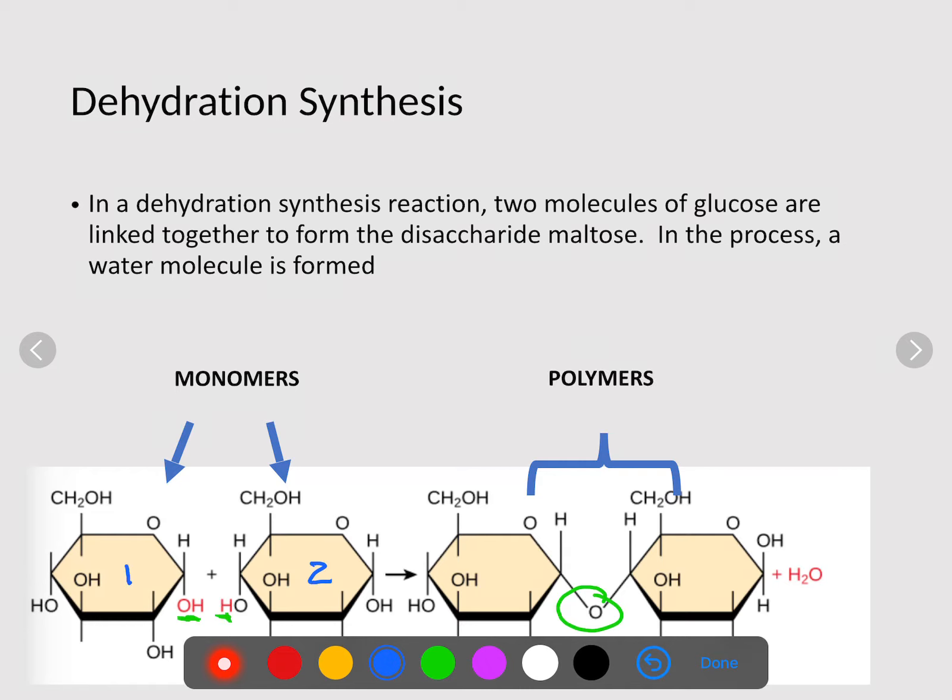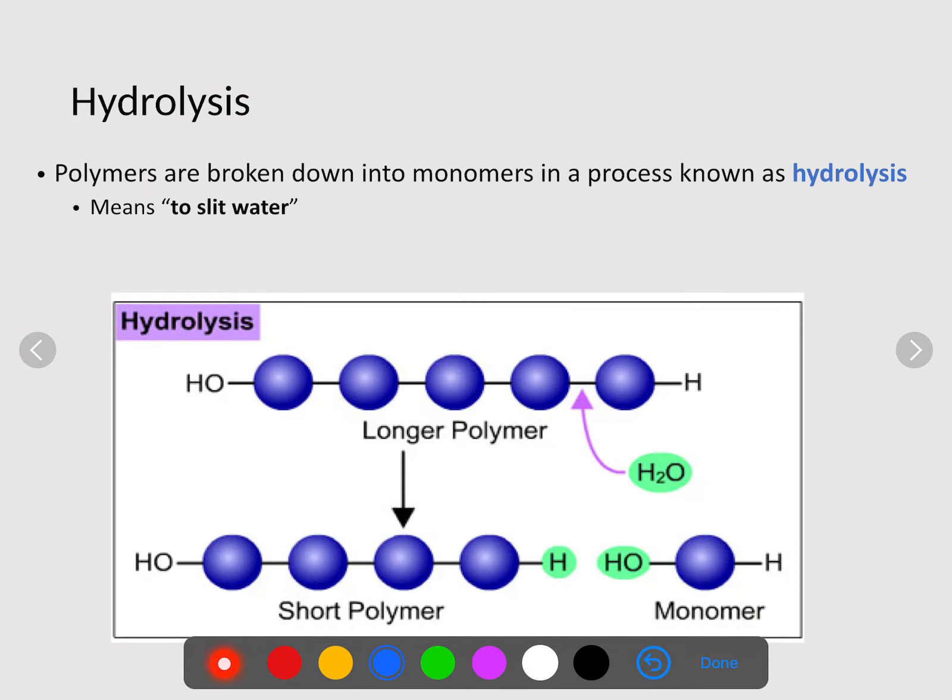Polymers are broken down into monomers from big to small in a process known as hydrolysis. Hydrolysis means to split water. Here is the bond that we are trying to break. Water is added in, and when we add that water, we split the two molecules apart. Hydrolysis is putting water in to split a molecule, while dehydration is taking water out to make a polymer.